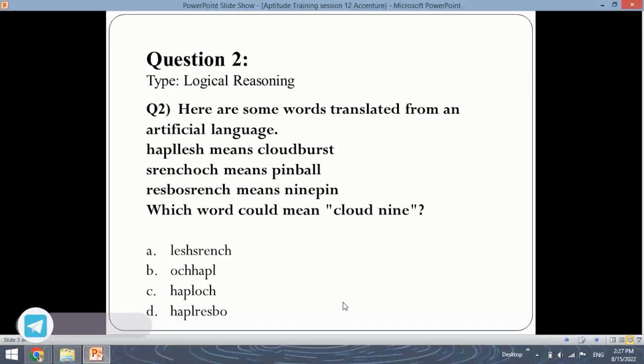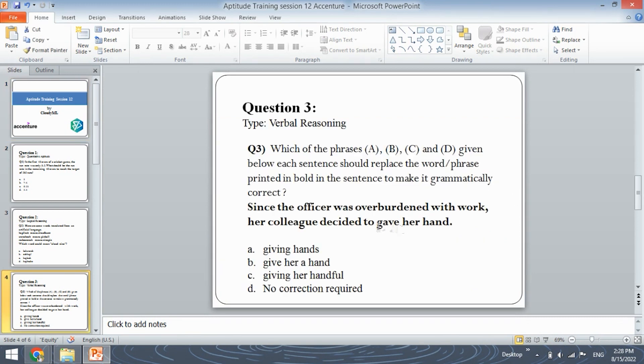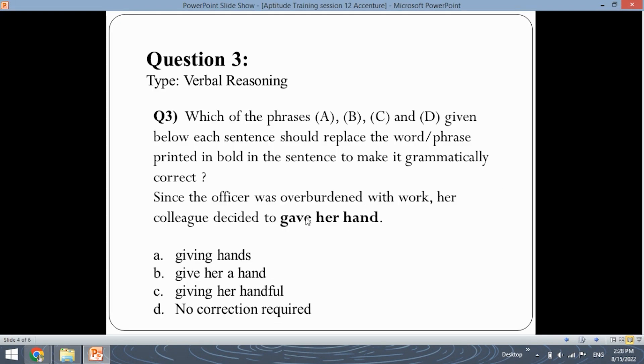Let's move ahead with the verbal reasoning question, the third question. Which of the phrases A, B, C, D given below each sentence should replace the word phrase printed in bold in the sentence to make it grammatically correct? Here is the sentence. Since the officer was overburdened with work, her colleague decided to gave her hand. In this, gave her hand is the bold part. You need to find out which among the given sentences can be used to replace this phrase, which is gave her hand.